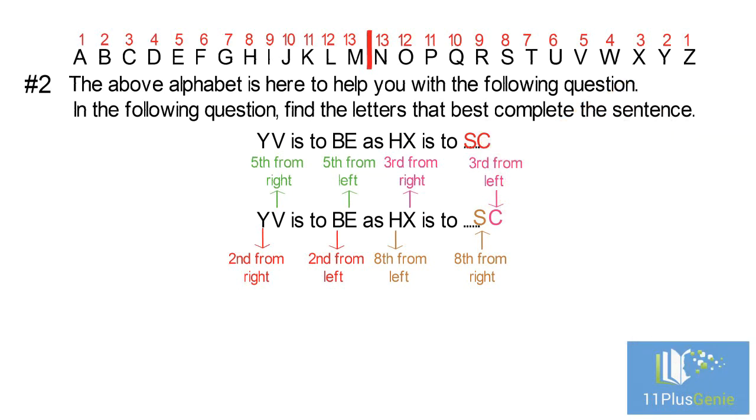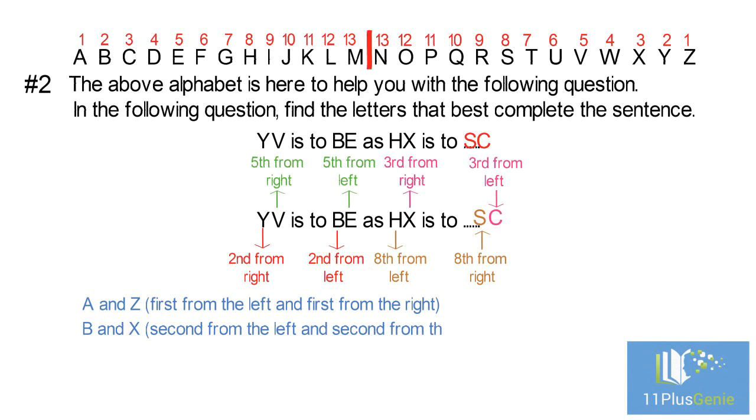You will save yourself a lot of time in the exam if you learn to spot the following pairs immediately: A and Z, first from the left and first from the right. B and X, second from the left and second from the right. C and Y, third from the left and third from the right. M and N, both sides of the mirror lines.